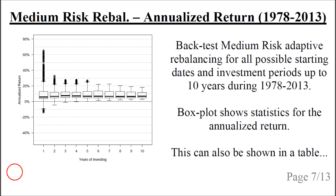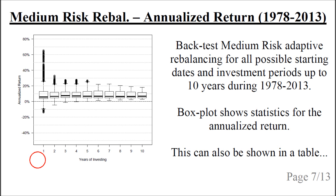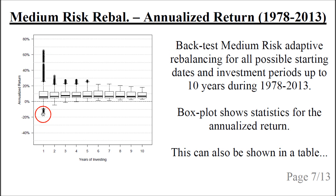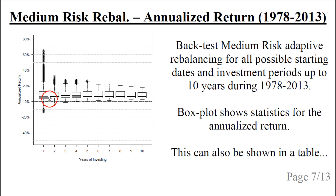We can do a backtest using the medium risk adaptive rebalancing strategy on all possible starting dates and investment periods up to 10 years during 1978 to 2013. The box plot shows the statistics for the annualized returns, with years of investing on the horizontal axis from 1 to 10. For a one-year investment period, the worst loss was almost minus 15% and the best gain was more than 65%, with a median of about 5–6%.